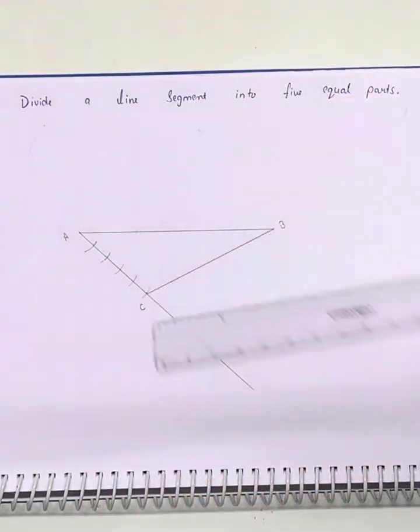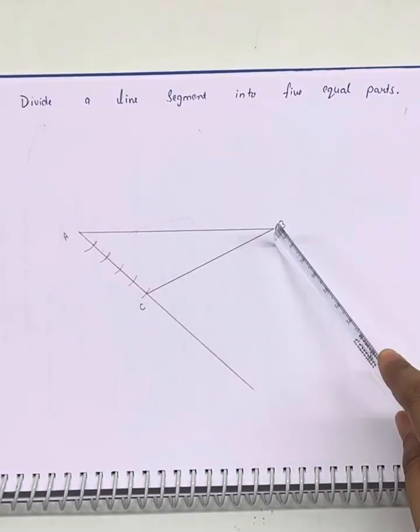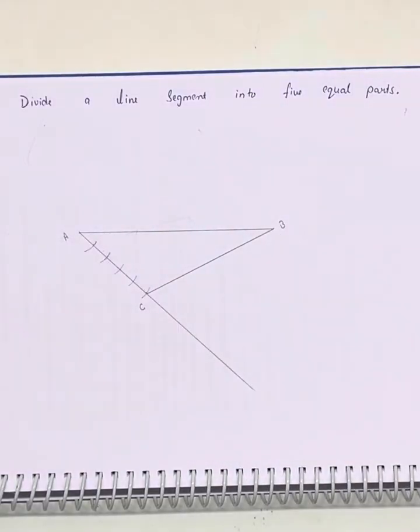Now all we need to do is draw parallel lines, lines parallel to BC at these mark distances. We will use set square for this.